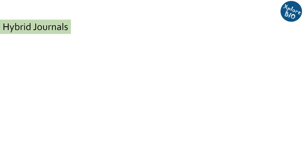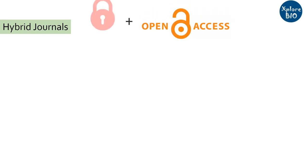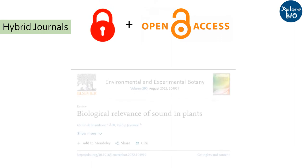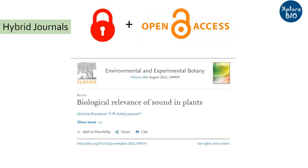A third category of journals are hybrid journals. In these journals, you can publish either in open access mode or in subscription mode. I recently got my review published in Environmental and Experimental Botany, which is a hybrid journal of Elsevier. I did not want to spend money for publishing, therefore opted to publish it in subscription mode.